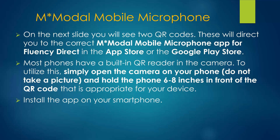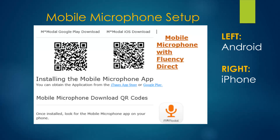When a small tab pops up on your screen, click it to go to the app. If the QR codes do not take you to the app, go to your app store, search M-Modal, and install the 3M mobile microphone.